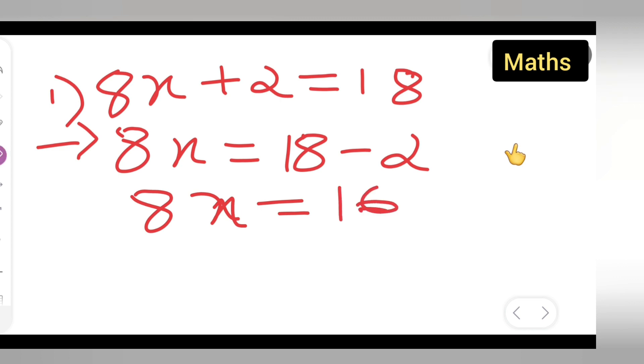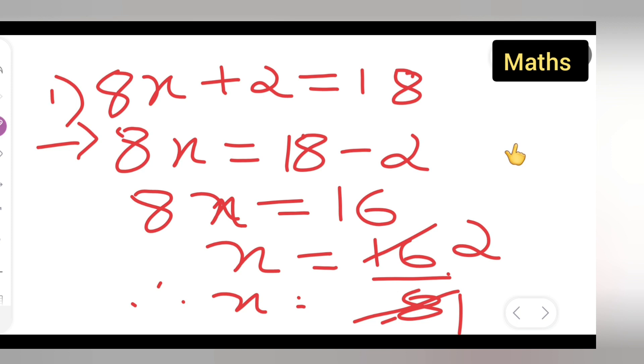So you will get x is equal to 16 upon 8. Cancel this 8: ones are 8, twos are 16. Therefore the value of x will be 2. So I hope you all have understood